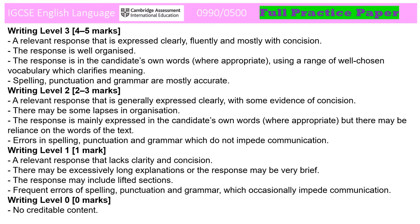5 marks are also allocated for the quality of your writing. Note the writing bar is lower for this question compared to paper 2. In paper 2 for directed writing, the top band wants you to have a wide range of sophisticated vocabulary precisely used and spelling, punctuation and grammar almost always accurate. Here we are after clarity, concision, and in terms of spelling, punctuation and grammar, it is mostly accurate rather than almost always accurate. So that mightily irritating missing apostrophe may not prevent you from getting the full 5 marks here after all.